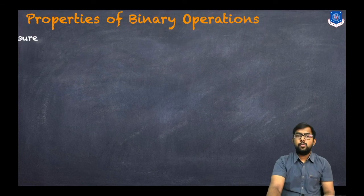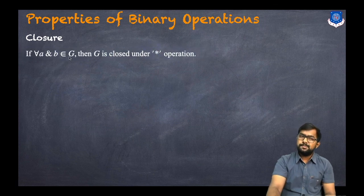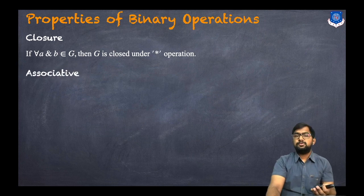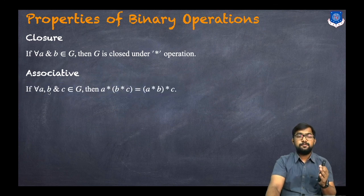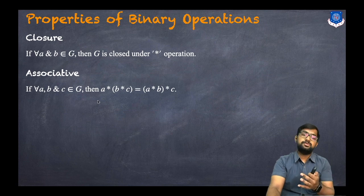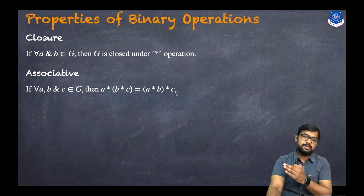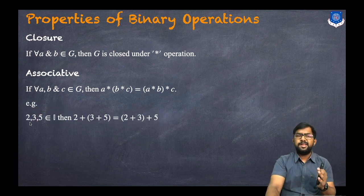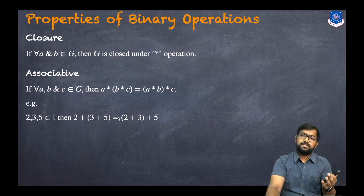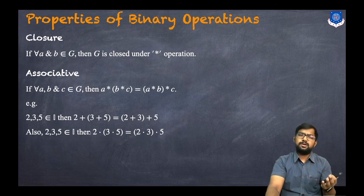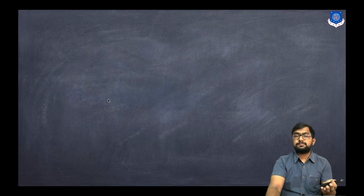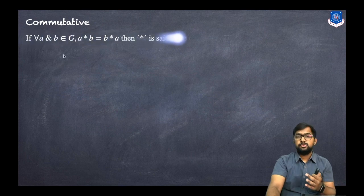Now, what are the properties of binary operations? The first is the closure property: for every a and b belonging to G, G is closed under the star operation. The second is the associative property: for every a, b, c belonging to G, (a star b) star c equals a star (b star c). This means we can change the brackets and the answer won't change. For example, with integers, (2+3)+5 equals 2+(3+5). Both addition and multiplication are associative.